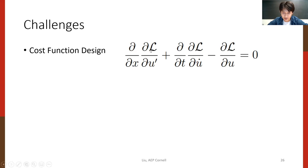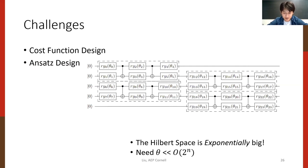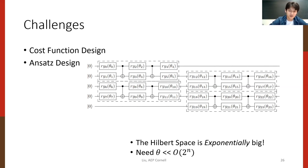Second, ansatz design. The Hilbert space is exponentially large — that's the source of the method's power — but the number of parameters must be much less than 2^n, since we can't optimize 2^100 parameters on any classical computer. This creates a trade-off between expressivity and reducing the number of parameters. That is an open problem.